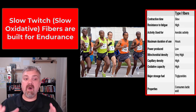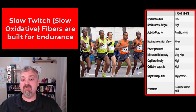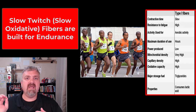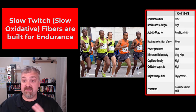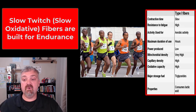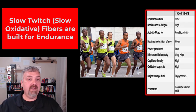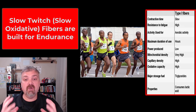Slow twitch fibers are also called slow oxidative fibers because they use aerobic respiration, primarily of glucose and triglycerides. They have a slow contraction time but high resistance to fatigue. They are aerobic and can be used for hours — think endurance activities like long-distance running or marathons — but they are not very powerful. They have a lot of mitochondria and blood vessels, and their major stored fuel is triglycerides. When you are physically active they also rely on aerobic respiration using glucose.